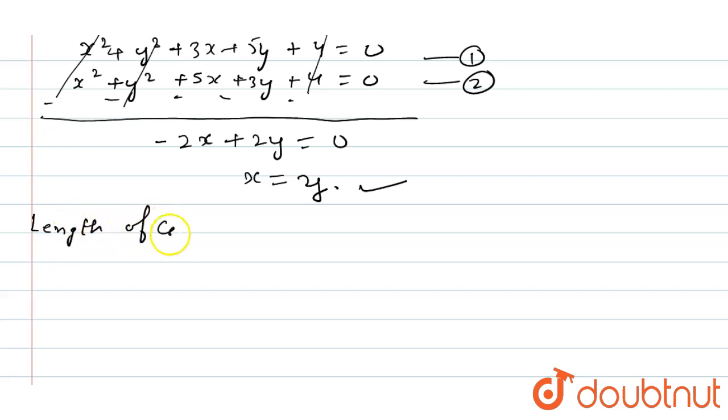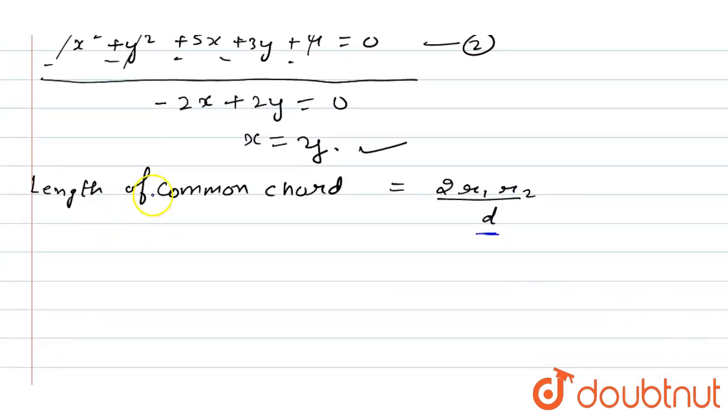The formula for length of common chord is 2 into r1, r2 upon d. Here, d is the distance between the two centers.